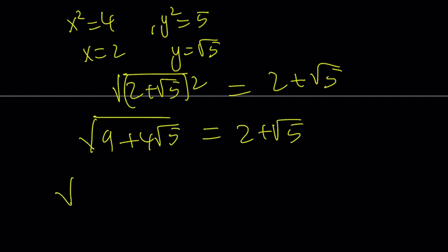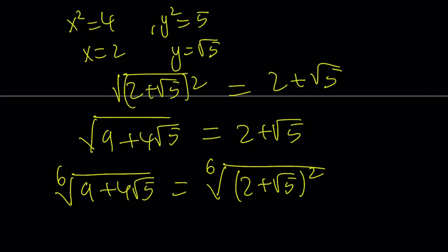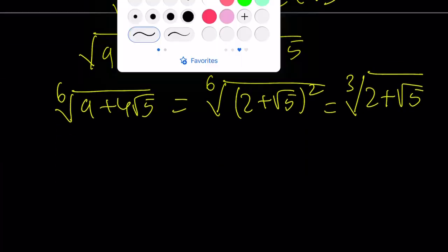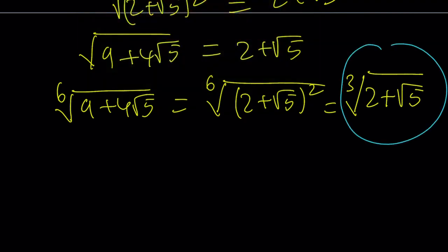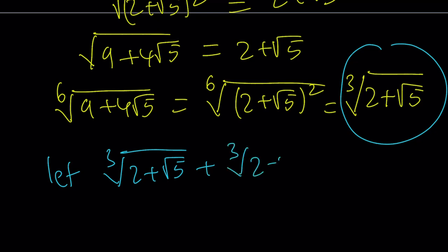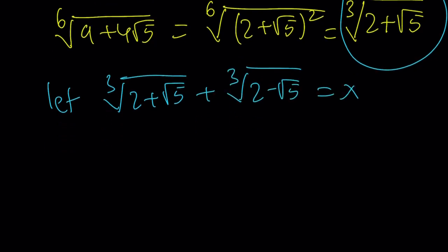Now we got that, but we do need the 6th root of our expression, not just the square root, but that can be handled. Since we know that 9 plus 4 root 5 can be written as 2 plus root 5 squared, the square and the 6th root kind of cancel each other out, and we can write this as the cube root of 2 plus root 5. So the next question is, how do I simplify this? Let the cube root of 2 plus root 5 plus the cube root of 2 minus root 5 equal x, and let cube root of 2 plus root 5 minus the cube root of 2 minus root 5 equal y.